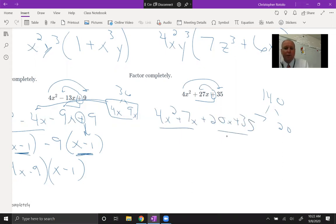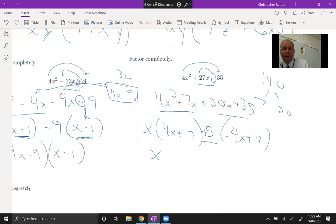GCF of the first two is just x, so 4x plus 7. I need to get 4x plus 7 again. So that means in this little space in between, 20 divided by 4 is 5. So that means it should be plus 5. 35 divided by 7 is 5, so it works out. x plus 5 and 4x plus 7. So that's our factored form. That's those trinomials, especially when the a value is greater than 1.